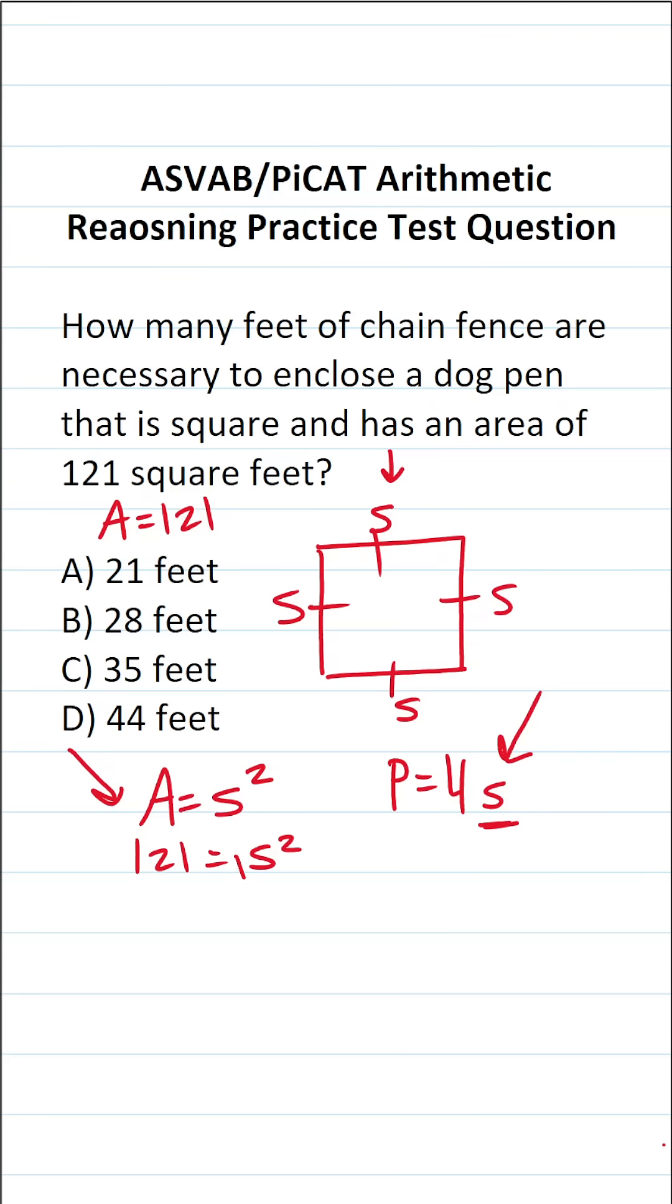To get S by itself, I can take the square root of both sides of this equation. This crosses out, leaving me with S over here. The square root of 121 is 11. So in other words, I know each of these sides of this square dog pen are 11 feet.